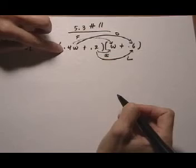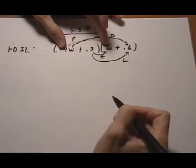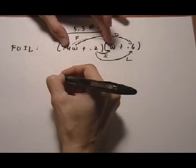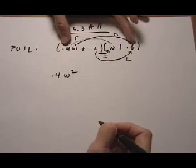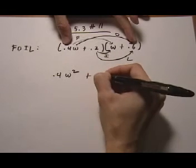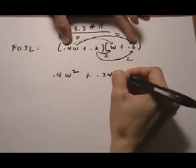So we're going to start with the .4W. .4 multiplies on the W and gives us .4W squared. Then we do .4W times .6 plus .24W.